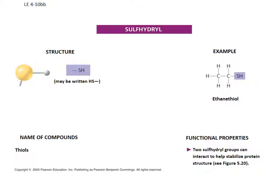Another group is the sulfhydryl group. It looks kind of like an OH group, except instead of having an oxygen, it has a sulfur — that big yellow ball in the diagram. Sulfhydryl groups are important because they help give stability to proteins. They can form a covalent bond with another amino acid that also has a sulfhydryl group, helping to provide structure and stability. These are also known as thiols.